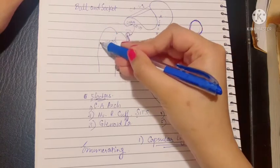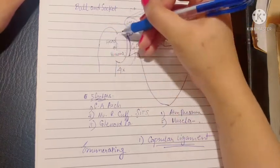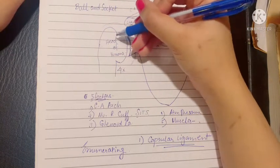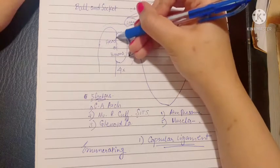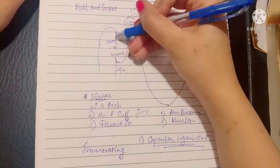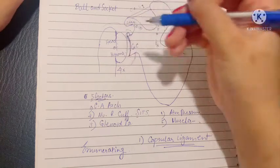Laterally, it is attached to the anatomical neck of the humerus. We know that the anatomical neck is basically separating the upper end from the head of the humerus. So laterally, it is attached to the anatomical neck of the humerus.